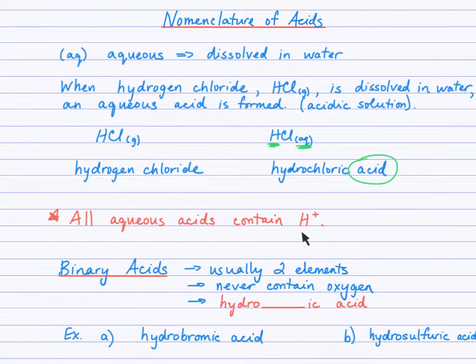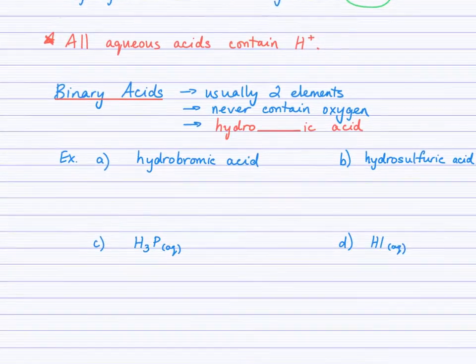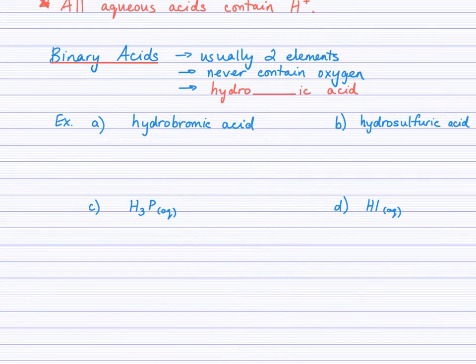So we're going to begin with binary acids. As the name suggests, bi, like bicycle, we think two wheels, a binary acid usually has two elements. I'd say 99% of the time. Never, though, will it contain oxygen. Never will it contain oxygen. You will always see the naming pattern hydro-something-ic acid. For example, hydrobromic acid, hydrosulfuric acid.